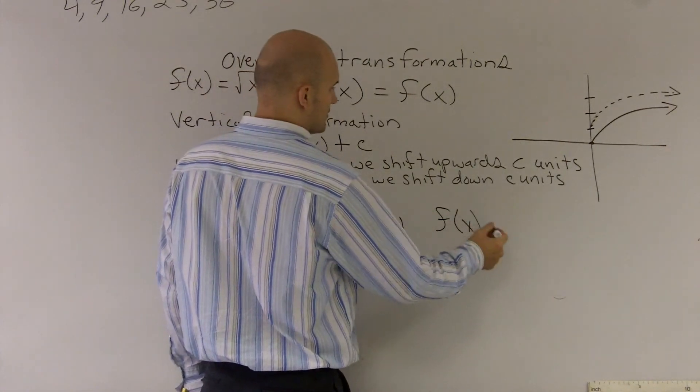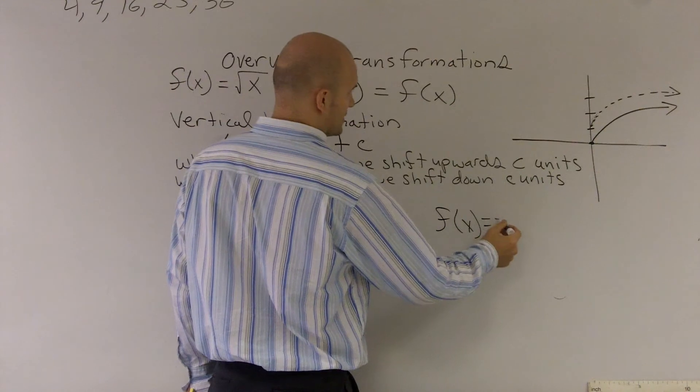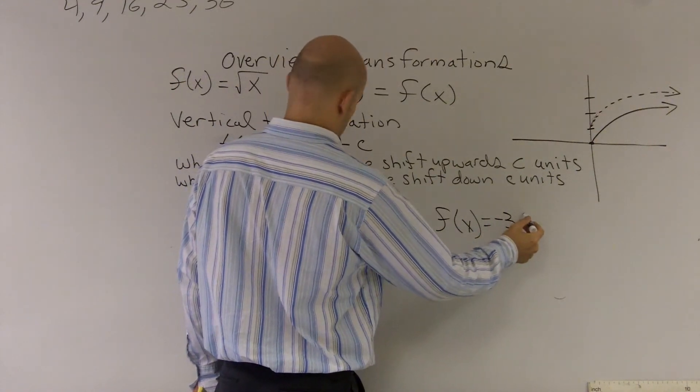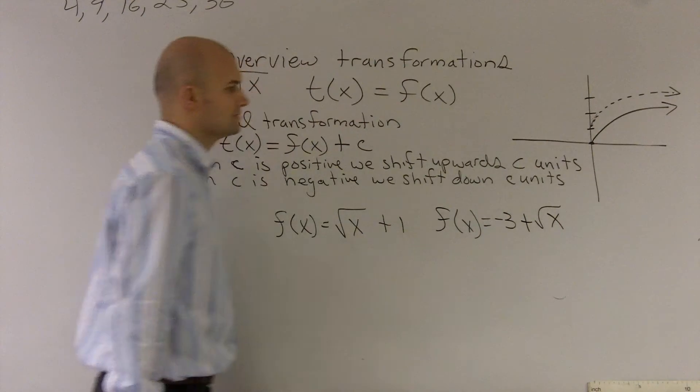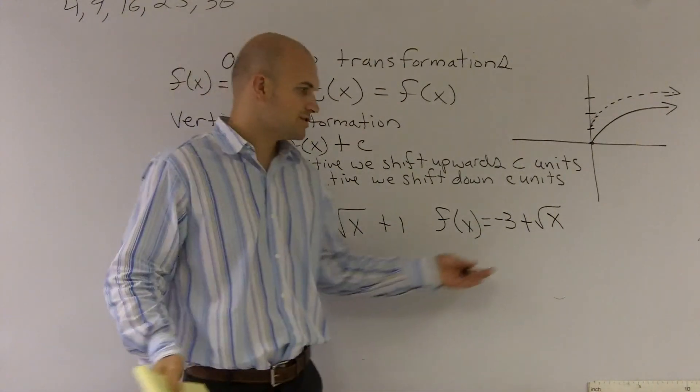I could also do, let's do -3 + √x. Now here I just tricked you a little bit and I just switched around the two forms, because usually we always write our variable in front.